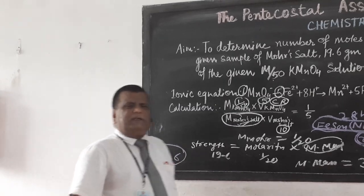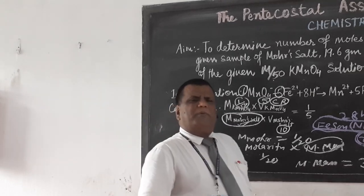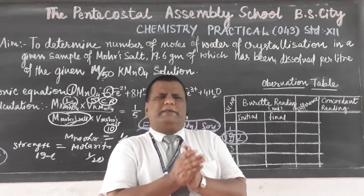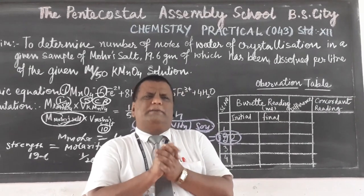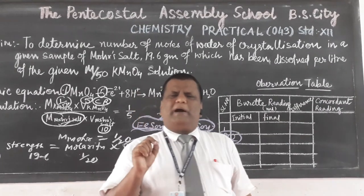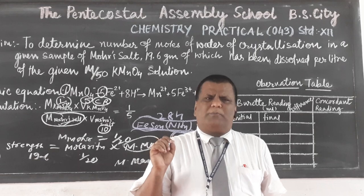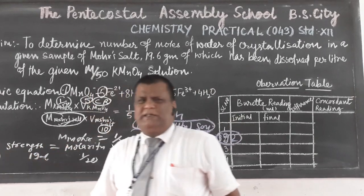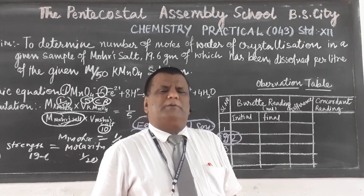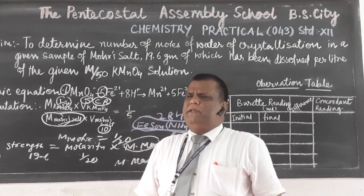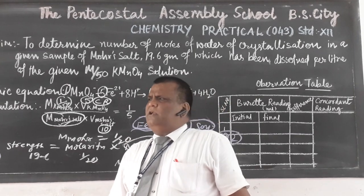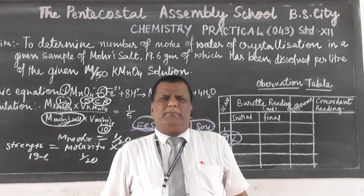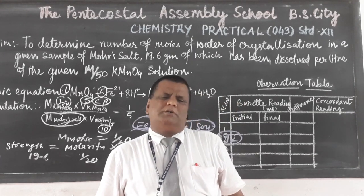So the result is: the number of moles of water of crystallization is 6. By this method we can find the number of moles of water of crystallization, calculated as 6. This is very important for your board exam — examiners often give this titration. Thank you very much.